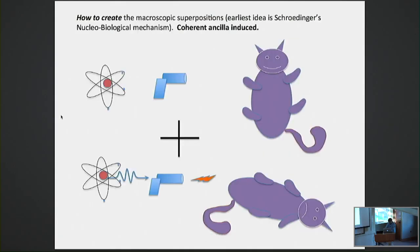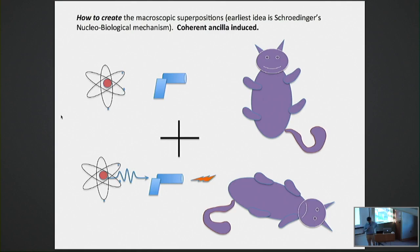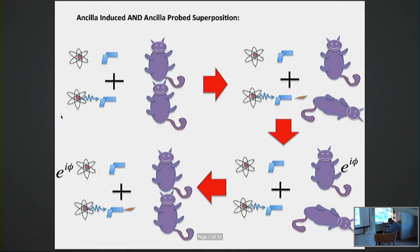My favorite scheme to generate these things actually originates from Schrödinger's idea of how to create a superposition — namely, it is ancilla-induced. You have something which can be created in a superposition — for instance, a radioactive atom that decays or not. Then there is a coupling with a macroscopic object: the gun is the coupling and the cat is the macroscopic object. So you take a bona fide quantum system and try to couple it to a larger system to create the superposition. My general approach has been both ancilla-induced and ancilla-probed superpositions.